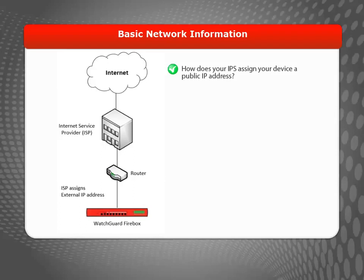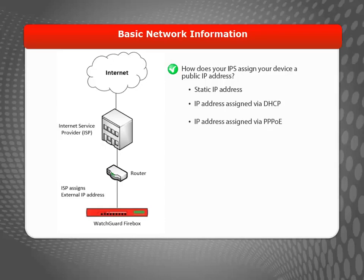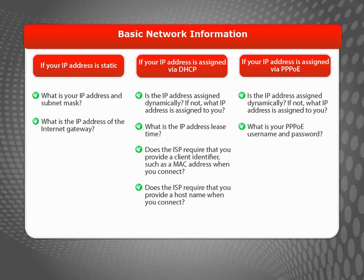If your Firebox is behind a router that connects to an Internet Service Provider, the first thing you need to know is how your Firebox will be assigned its external or public IP address. If you don't already know this information, you can ask your ISP. Your ISP could assign a static IP address, which is a permanent IP address that doesn't change. Or, your ISP might use DHCP or PPPoE to dynamically assign IP addresses. Here's a list of some more questions you'll want to ask your ISP — you'll need to know the answers in order to complete the Web Setup Wizard.